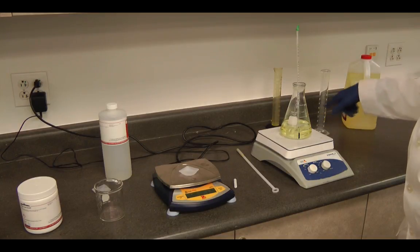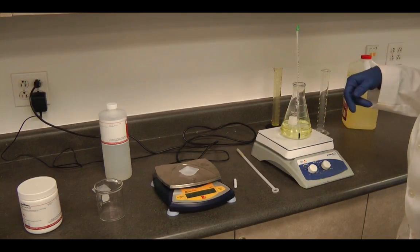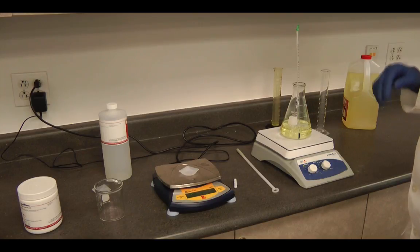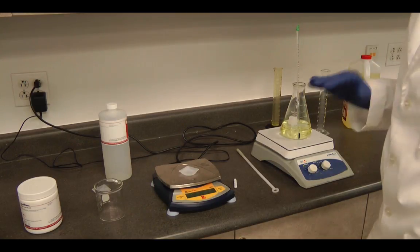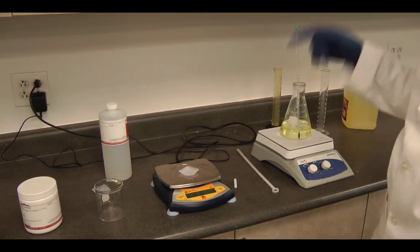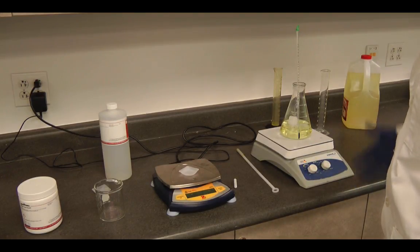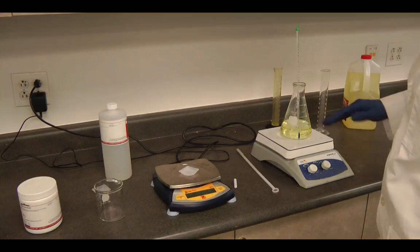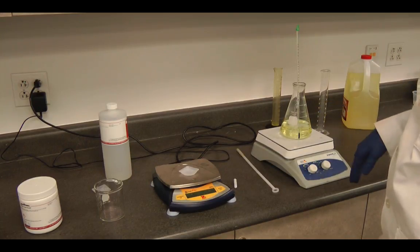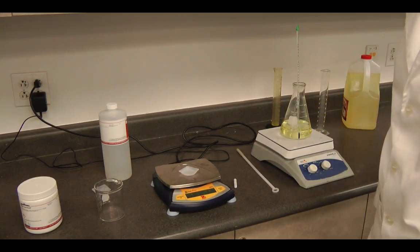It's on the stir plate that's heating the oil up to 60 degrees C. We want to be very careful that we don't overheat the oil because it can start to break down and then we won't have a good reaction. So it needs to stay as close to 60 degrees C as possible.